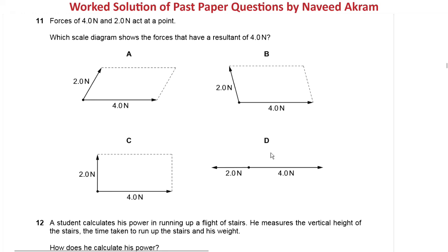Which scale diagram shows the forces that have a resultant of 4 Newton? If you look at these options, option D can be easily eliminated because in option D the vectors are anti-parallel, so in this case the resultant vector will be 4 minus 2 is equal to 2 Newton. So option D is eliminated.